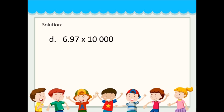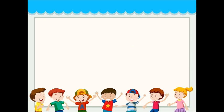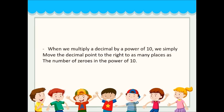The last example is 6.97 times 10,000. How many zeros? 1, 2, 3, and 4. So we move the decimal point four places to the right. Since there is no number there, we add two zeros. Our answer is 69,700. When we multiply a decimal by a power of 10, we simply move the decimal point to the right by as many places as the number of zeros in the power of 10.